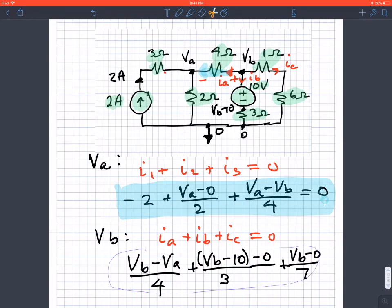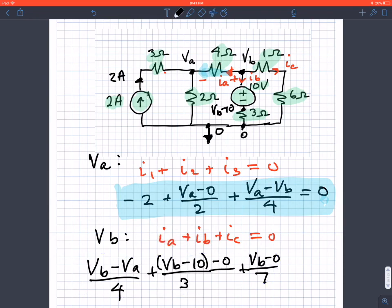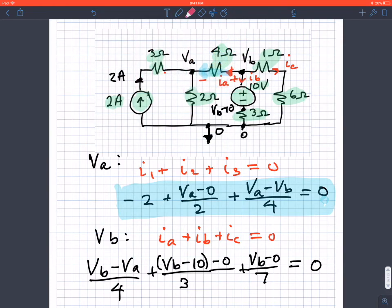We almost have an equation. Here's a common error: giving up too soon because those currents sum to zero. Be sure and put the zero in there. In red, we have the node equation at VB.